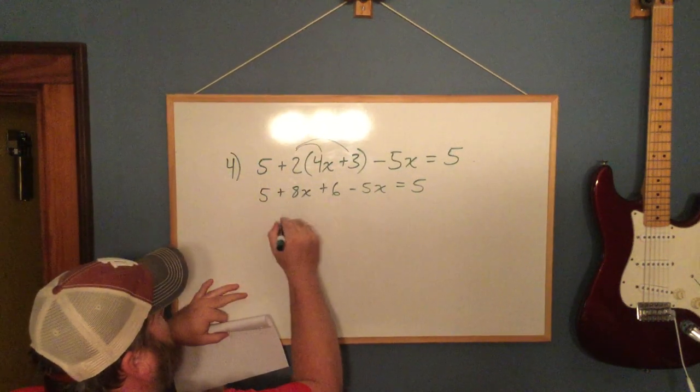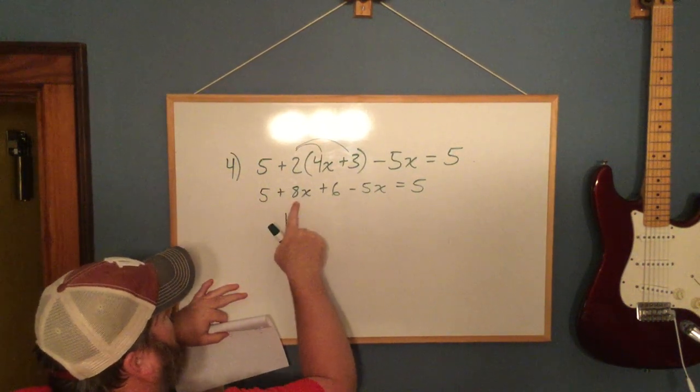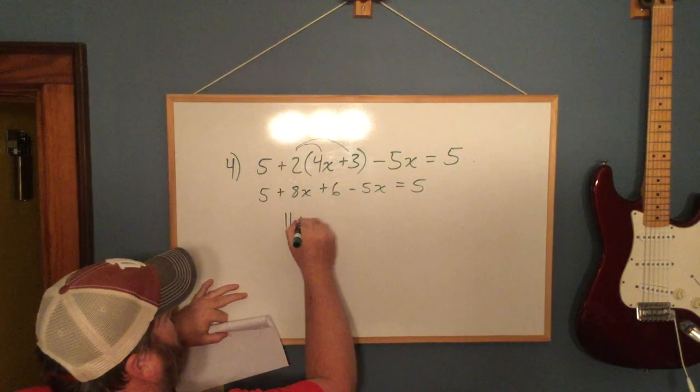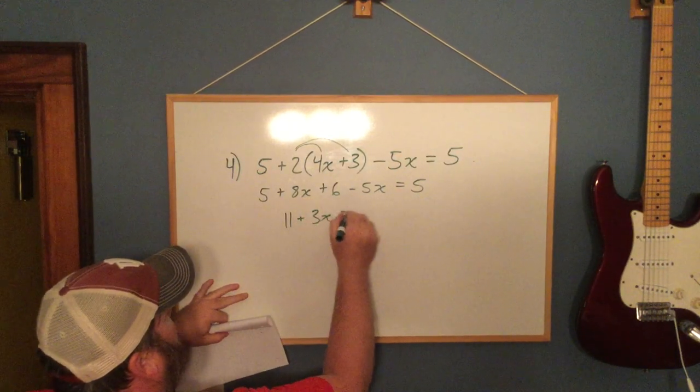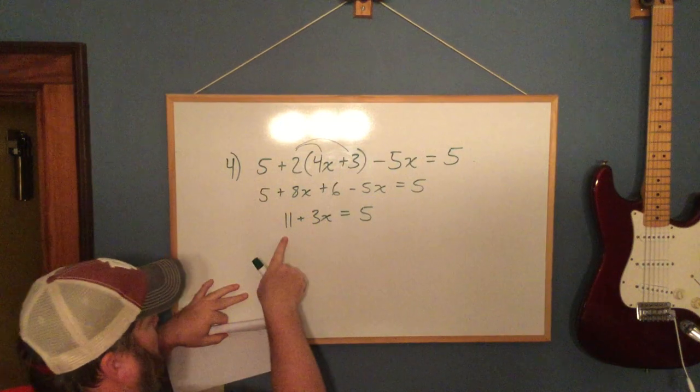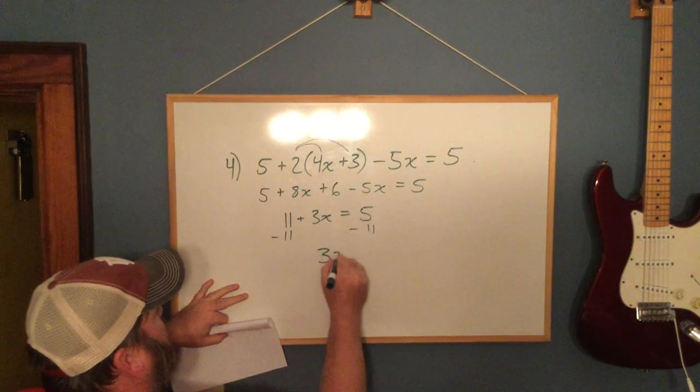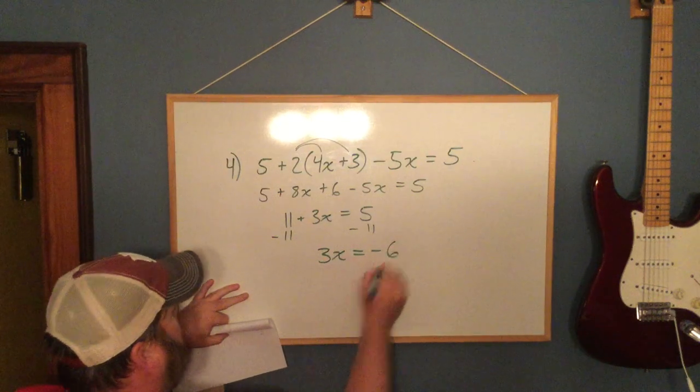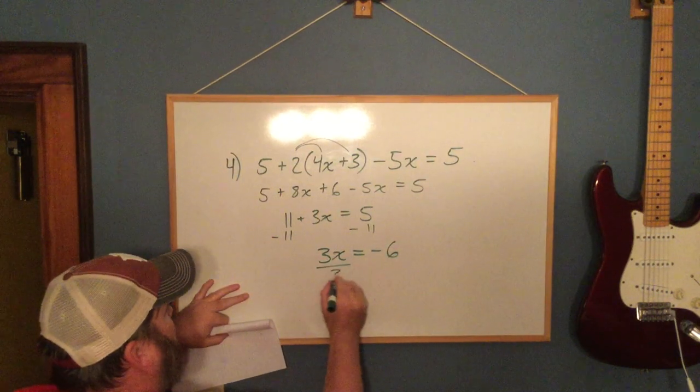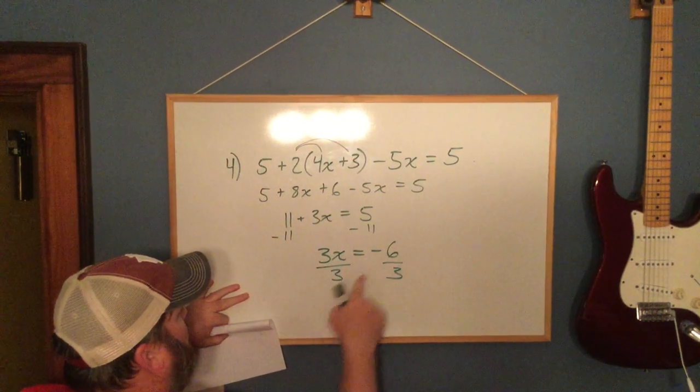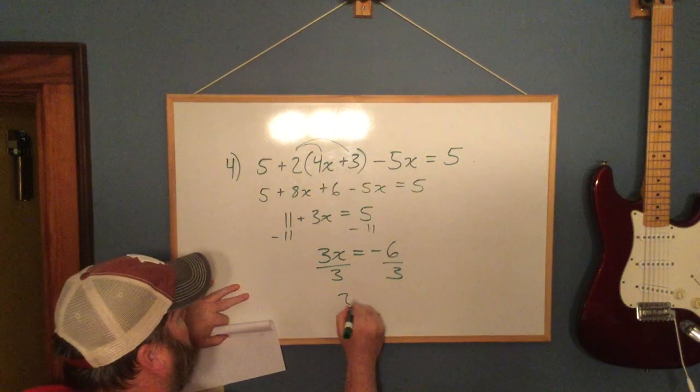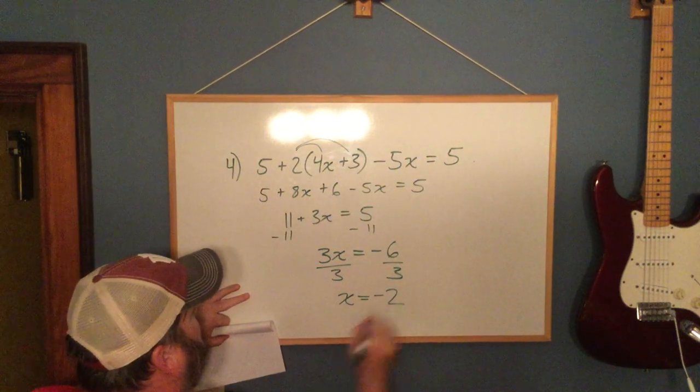5 and 6 make 11. 8 minus 5 is positive 3x. Get rid of our constant, so subtract 11. I have 3x equals negative 6. Divide by 3. A negative and a positive when you divide give you a negative 2.